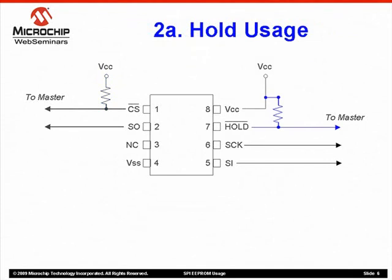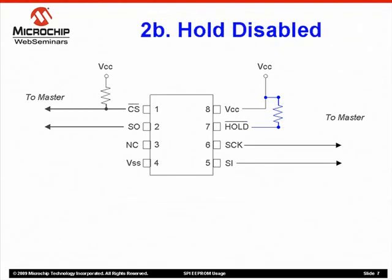Next, let's look at the hold pin's operation. Pin 7, hold, is used to suspend a bus transmission to the SRAM device in the middle of a sequence, allowing it to be completed later without the need to resend the entire sequence. If the hold pin is used in an application, it must be controlled by the master. Hold is active low, so it is held high during normal operation, and it should also have a pull-up resistor to prevent floating that could put the chip into an unexpected hold condition. Most applications don't use the hold pin's functionality; in that case, the pin should be tied high through a resistor. Note that this setup frees up a microcontroller pin and is the most common implementation of the hold pin.